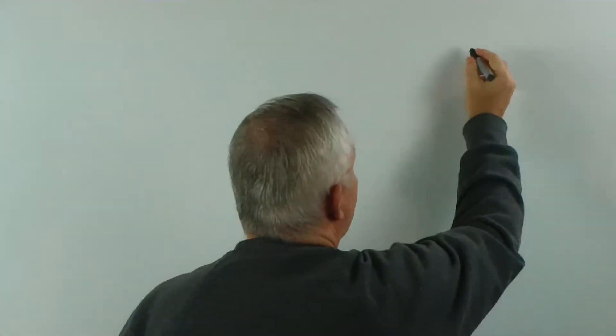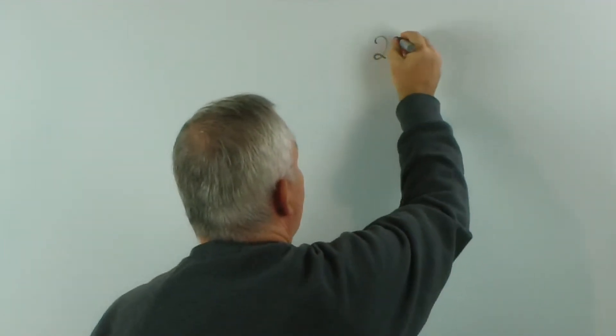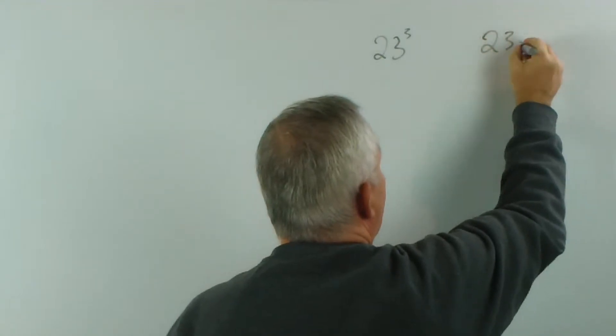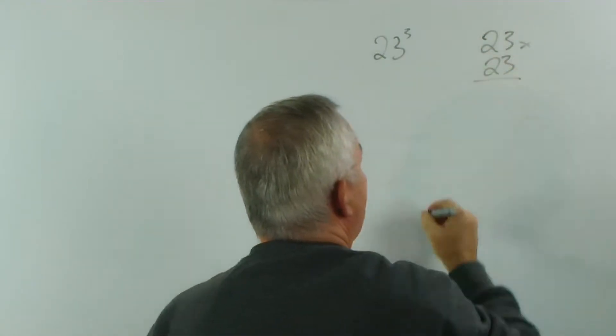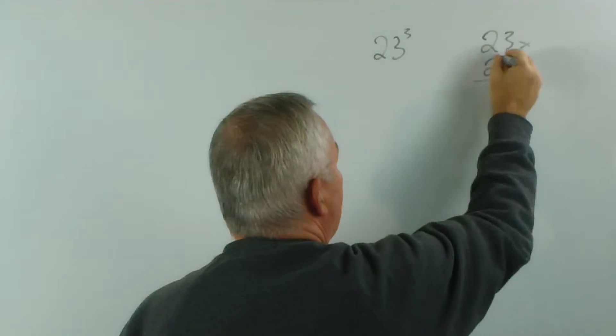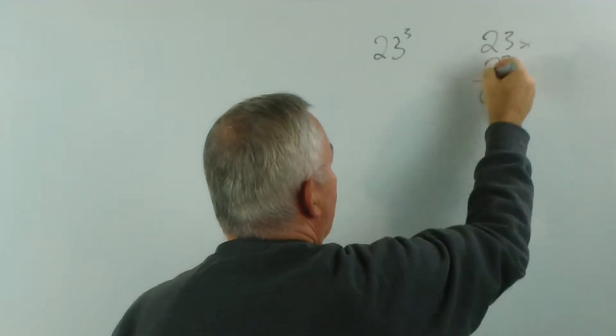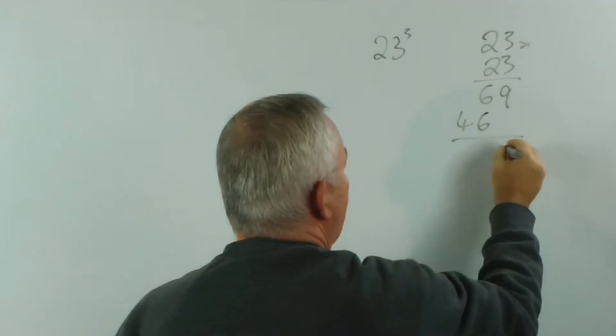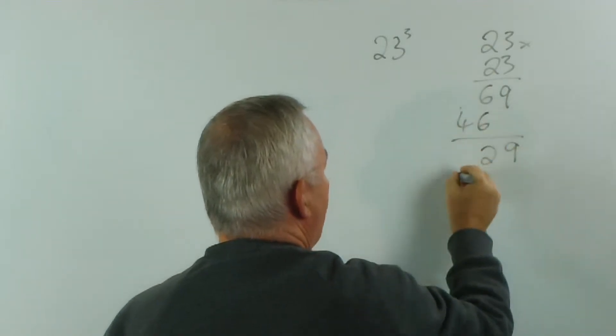The old-fashioned way of doing it, of course, I'll do over on this side. If I wanted to know 23 cubed, for example, we would multiply 23 by 23. 3 times 3 is 9, 3 times 2 is 6, 2 times 3 is 6, 2 times 2 is 4. That gives us 9, 12, carry the 1, 5.